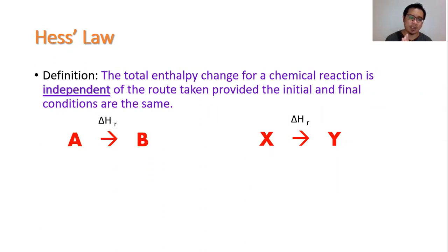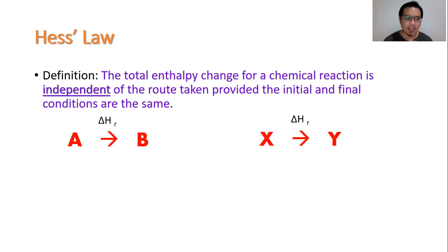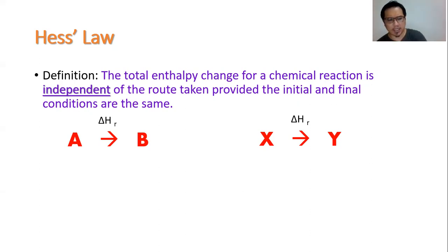I have two simple cycles drawn up here — one on the left, which is the conversion of A to B, and the other is the conversion of X to Y. These show how to construct the Hess's Law cycle based on the supporting information given. Most of the time, Hess's Law cycle questions give supporting information such as enthalpy change of formation and enthalpy change of combustion.